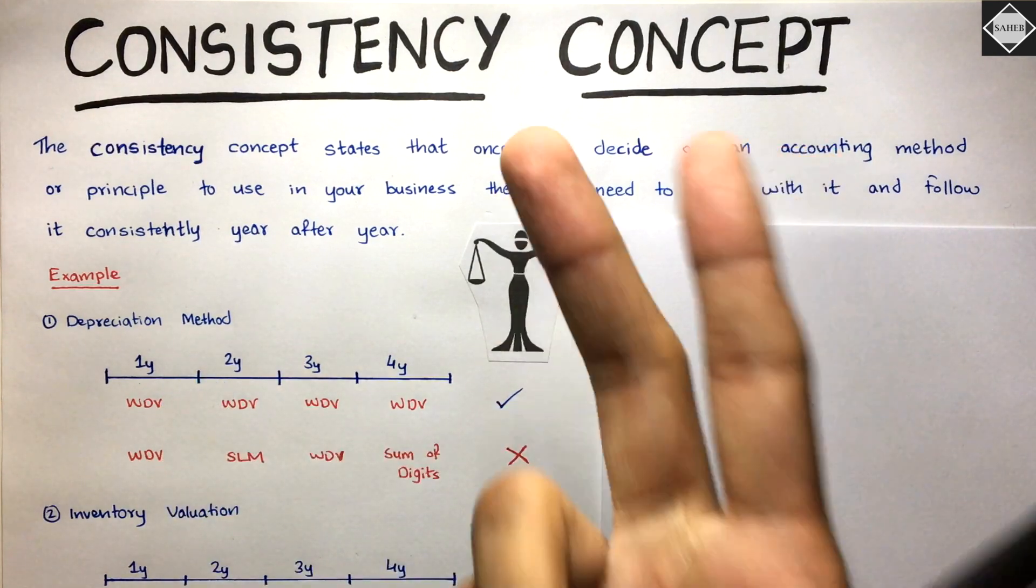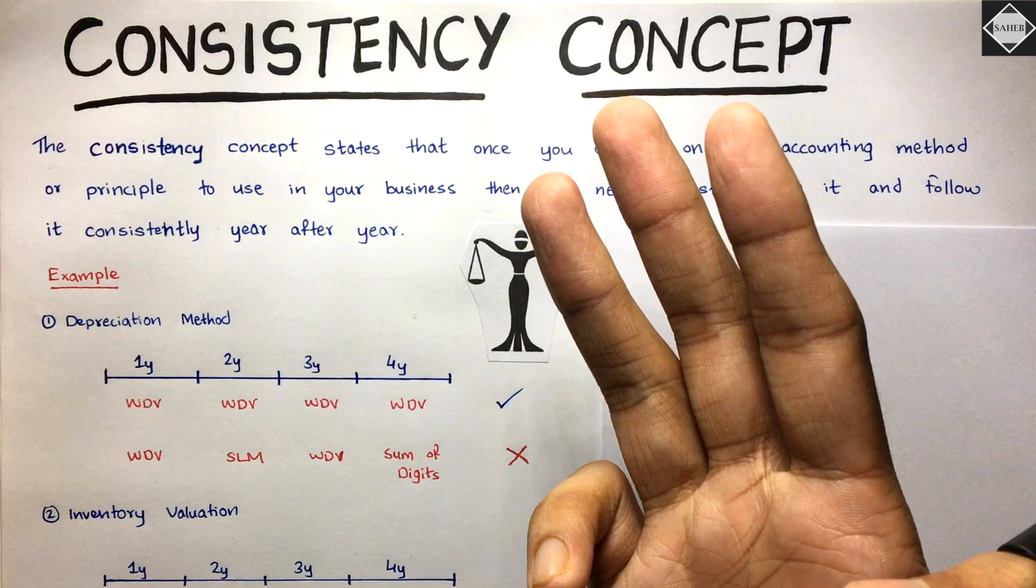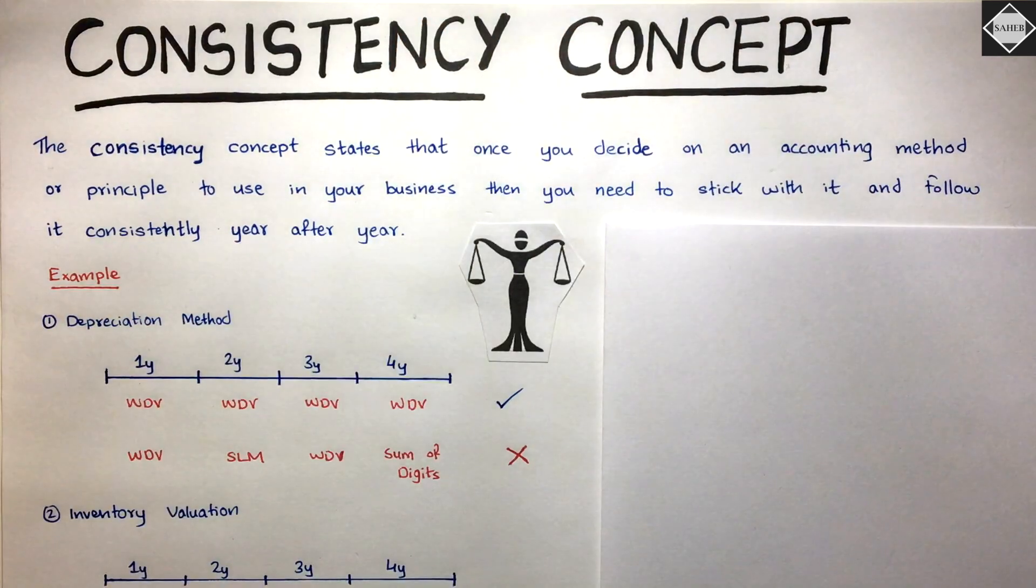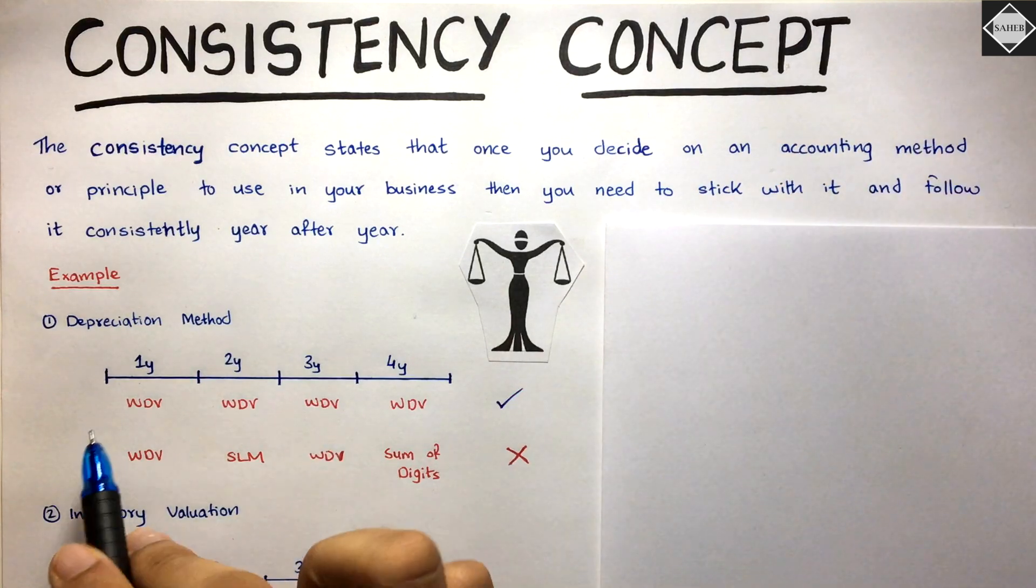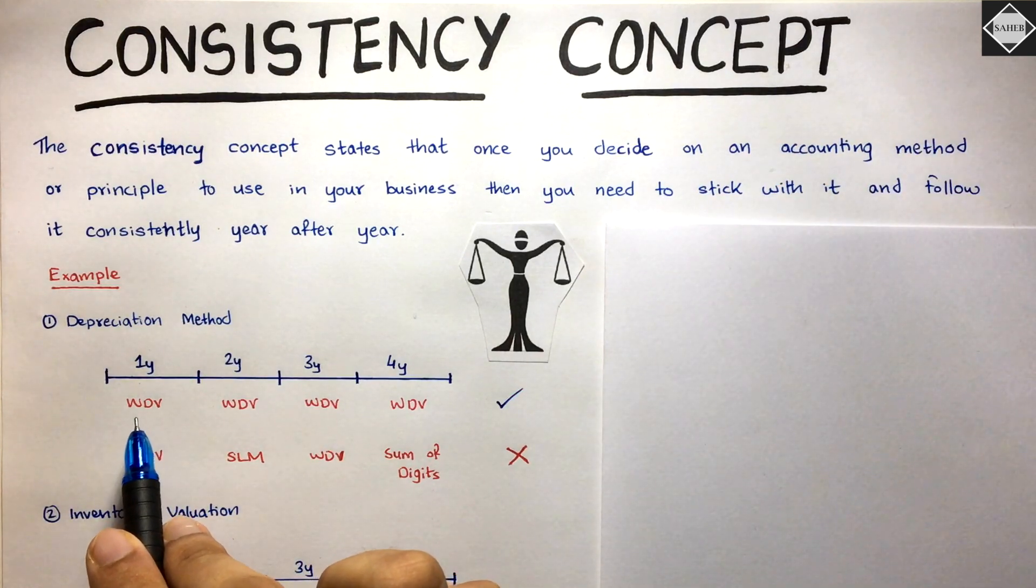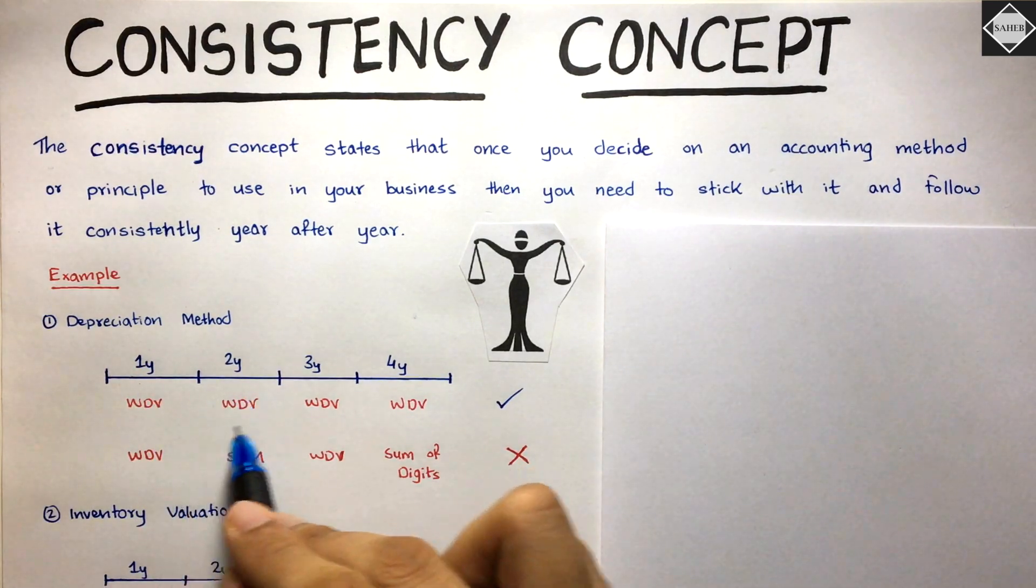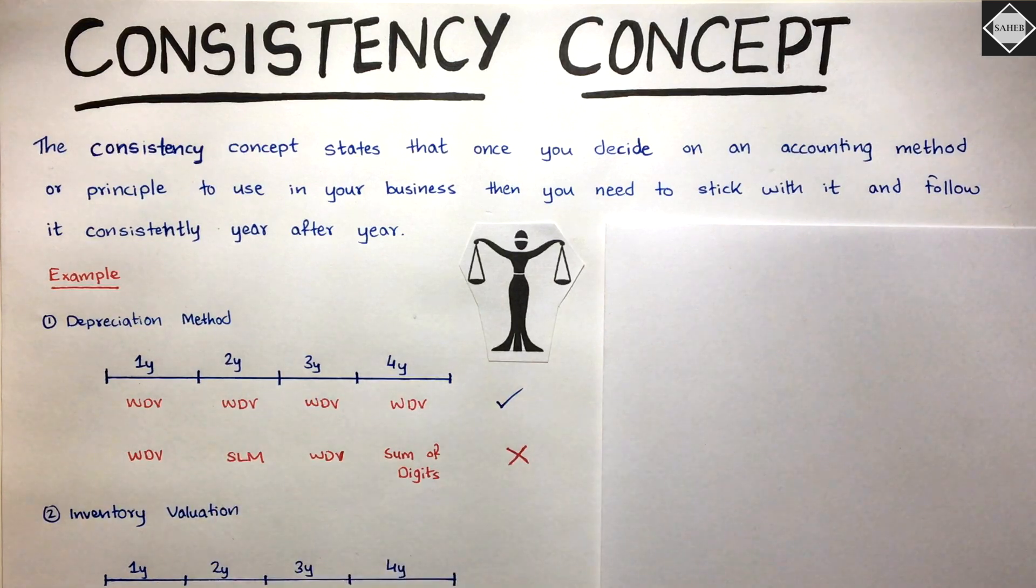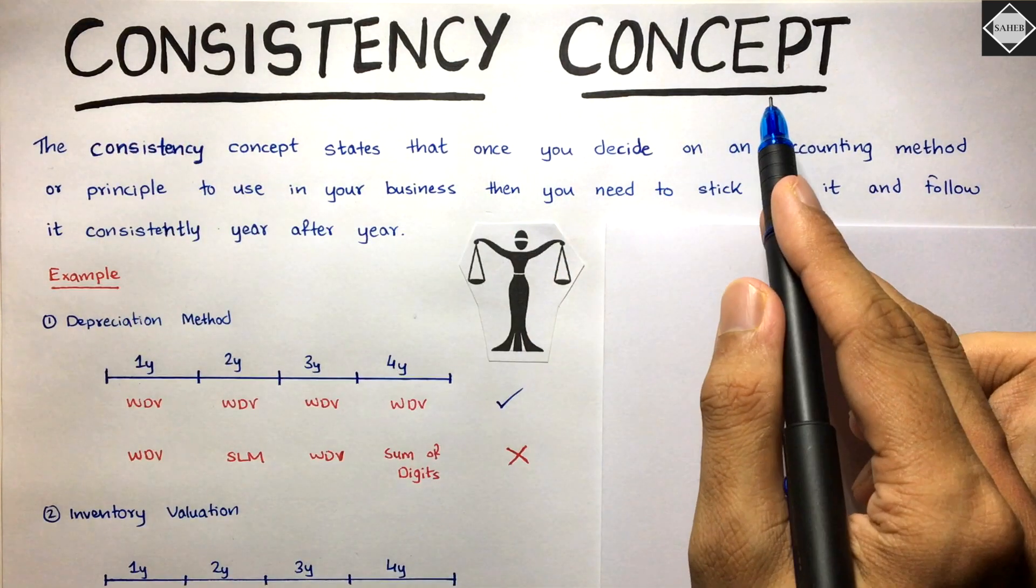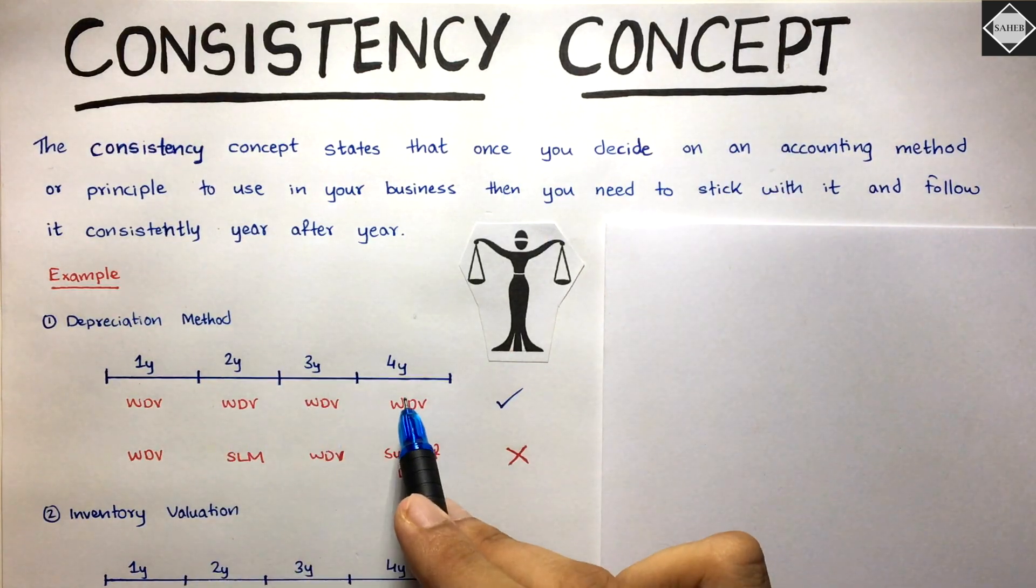You have WDV, SLM, sum of digits, units production methods - so many different methods, including double declining balance method. Let's say you went with WDV method (written down value or diminishing balance method). Then in the second year, you are supposed to use the same method.